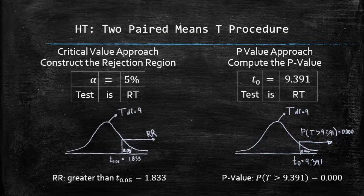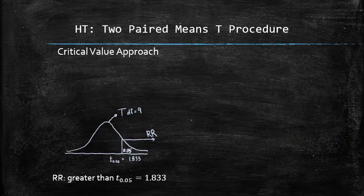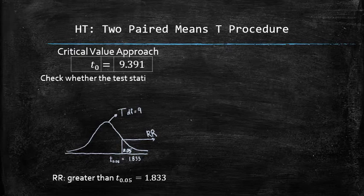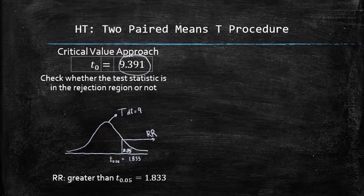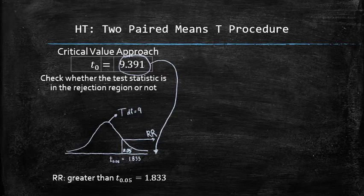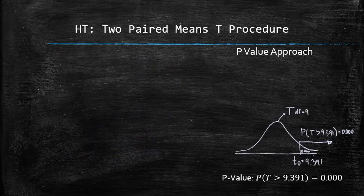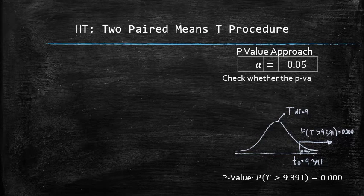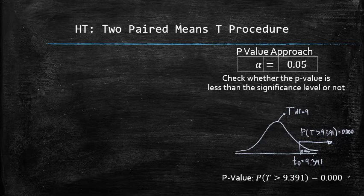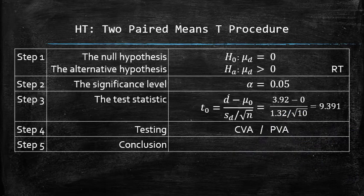Next, we are going to decide whether to reject or not reject the null hypothesis. In the critical value approach, we check whether the test statistic is in the rejection region. Our test statistic is 9.391, which is to the right of the critical value 1.833, so it is in the rejection region. In the p-value approach, we check whether the p-value is less than the significance level alpha. Our p-value is zero, which is less than alpha. Both approaches suggest that we do reject the null hypothesis in favor of the alternative.